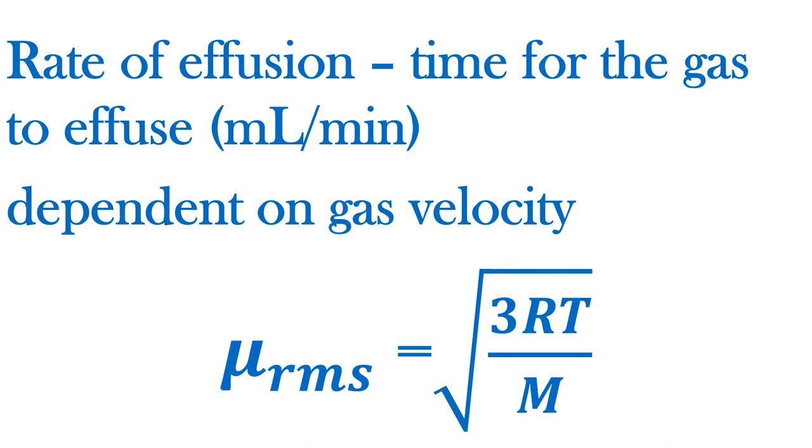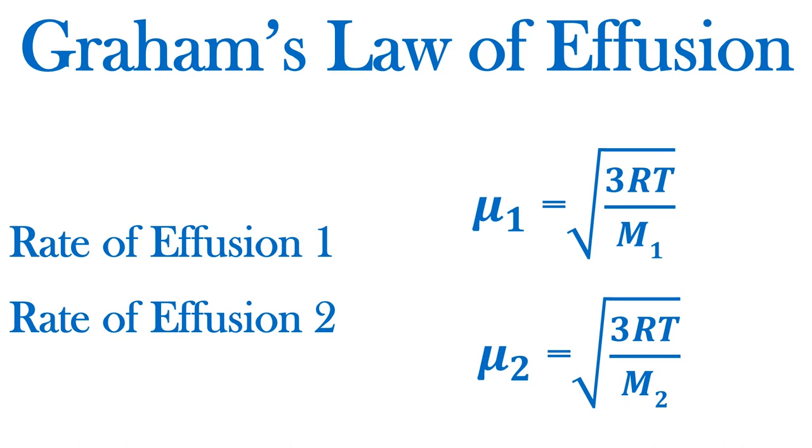Recall, the root mean square velocity is the square root of 3RT over the molar mass of the gas.